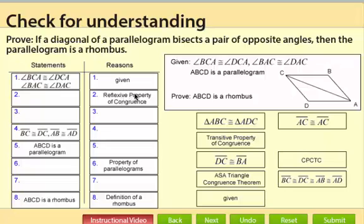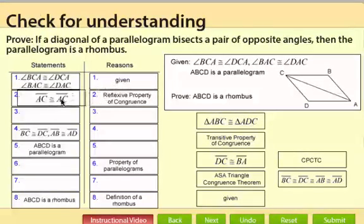Now our next reason is reflexive property of congruence, so we know it has to be segment AC congruent to segment AC.